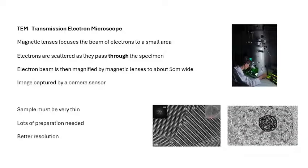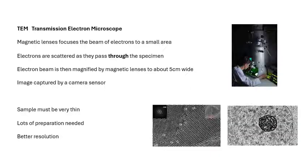The transmission electron microscope — the magnetic lenses focus the beam of electrons to a small area, then these electrons go through the specimen. Then you magnify the beam after it's been through, and you capture the image on some kind of sensor. To do this, the sample must be very, very thin — there's lots of preparation needed — but you do get better resolution of the two types of microscope. This is a TEM.